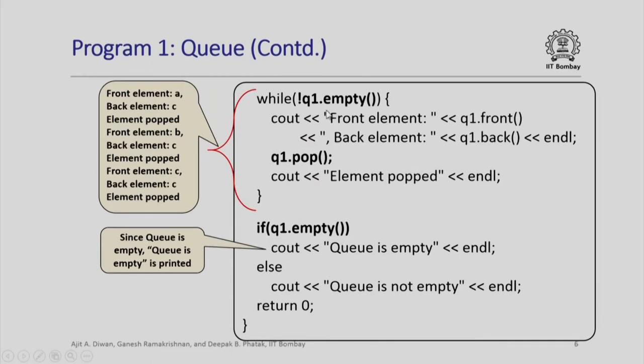We continue looking at this while the queue is not empty. We will output the front element that is queue 1 dot front. The back element is queue 1 dot back. We will pop the front element. Please note that queue 1 dot front only permits us to examine the front element. To remove it from the queue, we have to use pop.